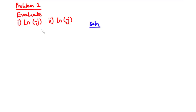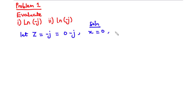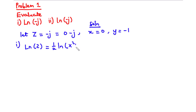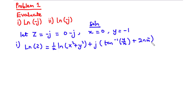We know that negative j is a complex number. So let z equal negative j, which equals 0 minus j. So the x value is 0 and the y value is negative 1. Since we want to find the general value, we use Equation 4. From Equation 4, Ln z equals one half times ln(x squared plus y squared) plus j times (tan inverse of y over x plus 2n pi), where n is any integer.